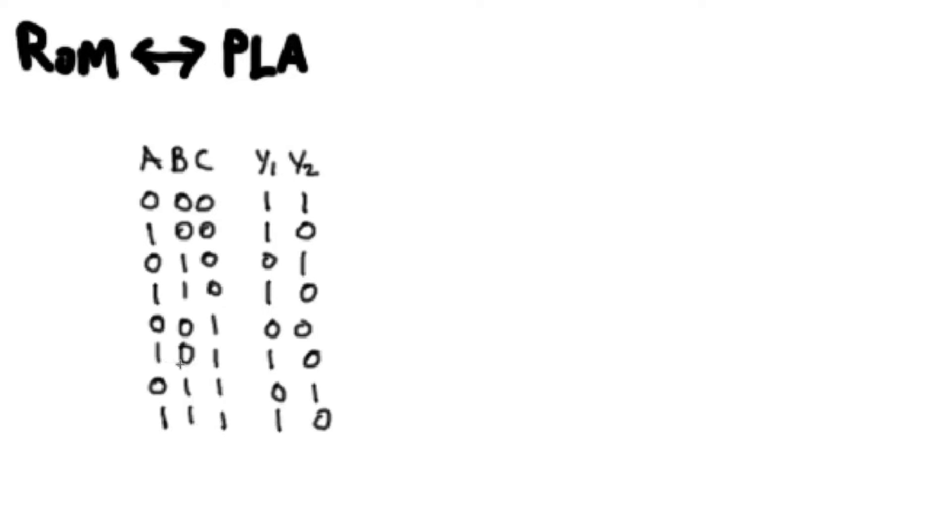If we actually look at the input conditions, we can see that 1, 0 shows up at 1, 1, 1, at 1, 0, 1, at 1, 1, 0, and at 1, 0, 0. In all these instances, B and C are constantly changing. So here we have BC is 0, 0. BC is 1, 0. BC is 0, 1. And BC is 1, 1. The only thing that's constant is A. So we can actually say that A, if it's on, will give us the output 1, 0.